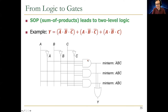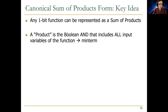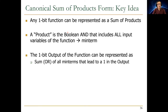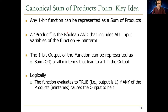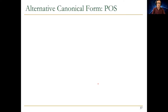Any one-bit function can be represented as a sum of products. If a function has two-bit output, you represent each output bit as a separate SoP expression. A product is the boolean AND of all input variables, called a minterm. The one-bit output of the function can be represented as the OR of all minterms that lead to a one in the output. The function evaluates to true if any of the minterms causes the output to be one.